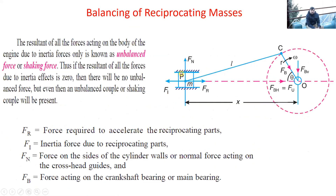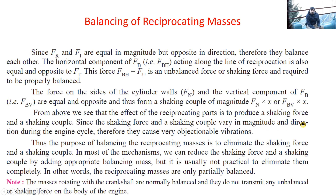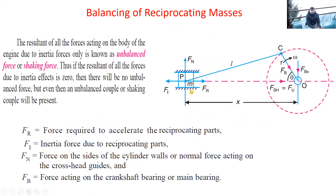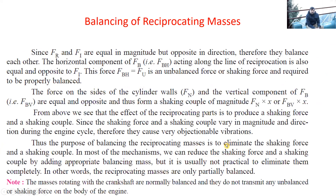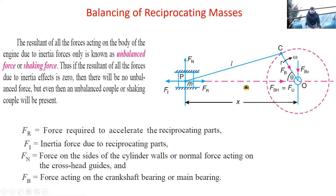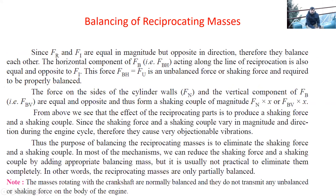The shaking force and shaking couple vary in magnitude and direction during the engine cycle, causing objectionable vibration. The purpose of balancing reciprocating masses is to eliminate the shaking force and shaking couple. However, the unbalanced couple is very difficult to balance completely, so there will always be some amount of unbalanced force or couple present. Therefore it cannot be completely balanced — it can only be done partially.